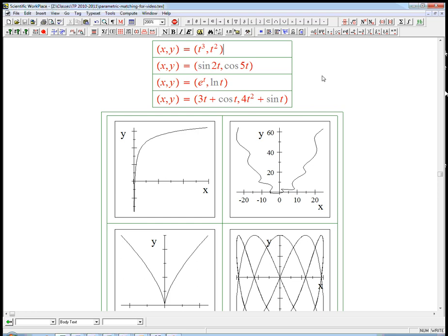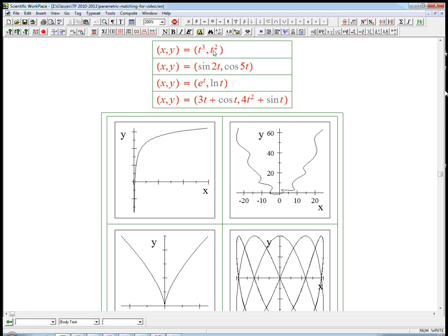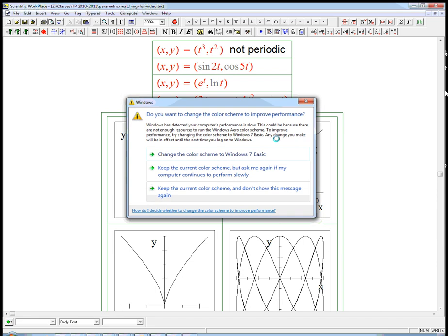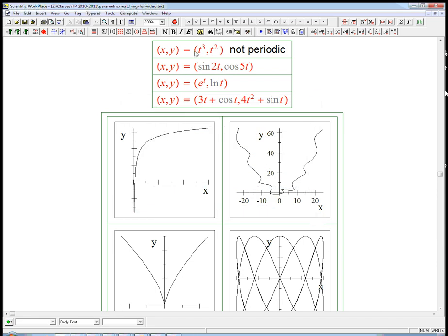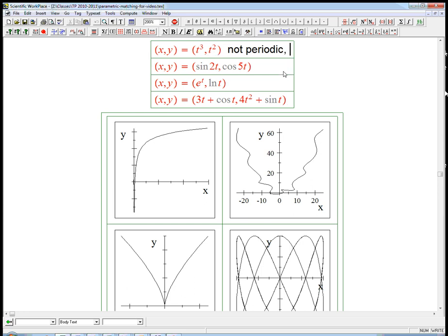I want to talk about some features that you can always look at in these equations. Here, one of the things is that there's no sines and cosines, so there's no repeating behavior. It's not periodic. Another thing you can always look for is does it go off to infinity or not? If I let t be anything, then this is going to go off to infinity, both plus and minus.